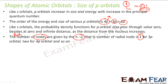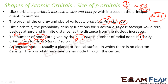For 3P, the number of radial nodes is 3 minus 2, which is 1. For 4P, it is 4 minus 2, which is 2. The angular node is a planar or conical surface in which there is no electron density. For P orbitals, we have one planar angular node, because the number of angular nodes equals L, and for P orbitals L equals 1.